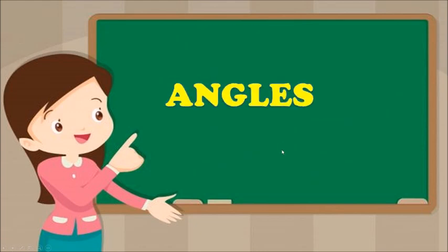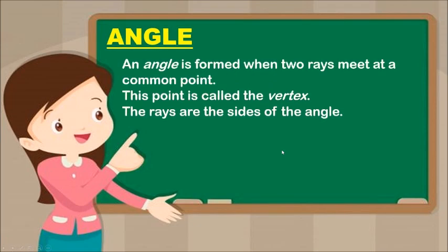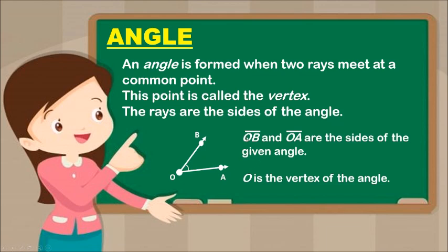Next is Angles. An angle is formed when two rays meet at a common point. This point is called the vertex. The rays are the sides of the angle. Line OB and Line OA are the sides of the given angle, and O is the vertex of the angle.